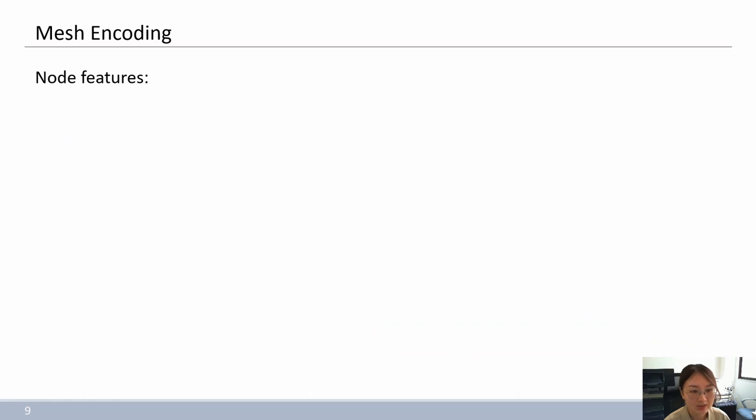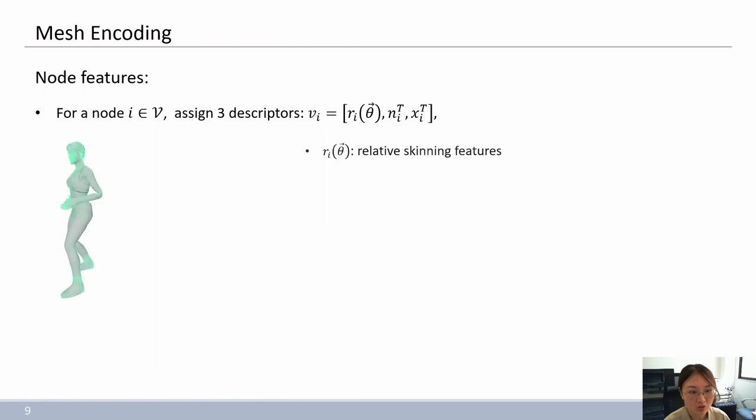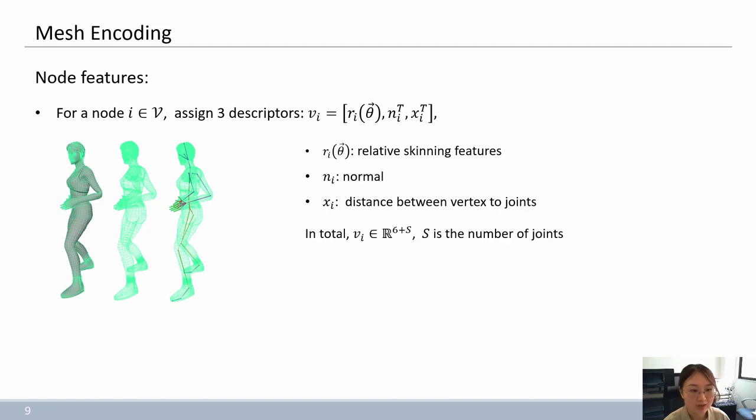In addition to relative skinning features, we also assign attributes of vertex normals and the distance between vertex to joints to the graph node. In this way, the graph feature representation has the expressive power of rough deformations that can capture the skinning features across different joint transformations, the whole range of surface features of different shapes, and the bending relations between joints and meshes.